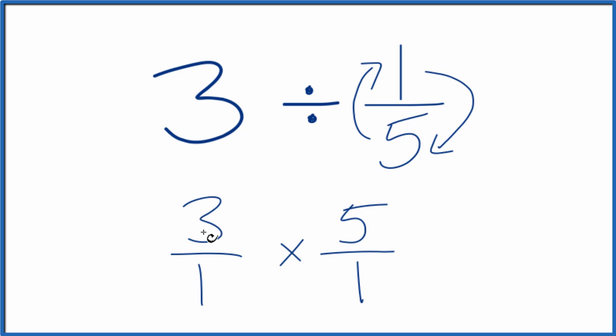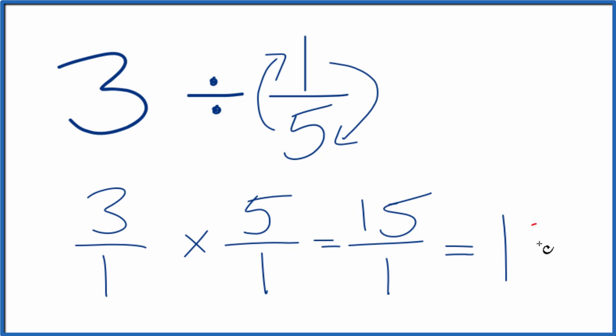Now we just do the multiplication. 3 times 5, that equals 15. 1 times 1 equals 1. 15 over 1, that's just 15.